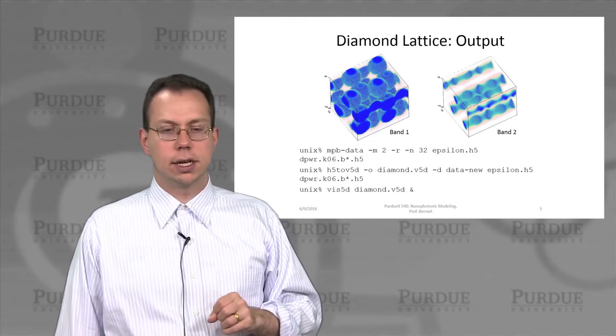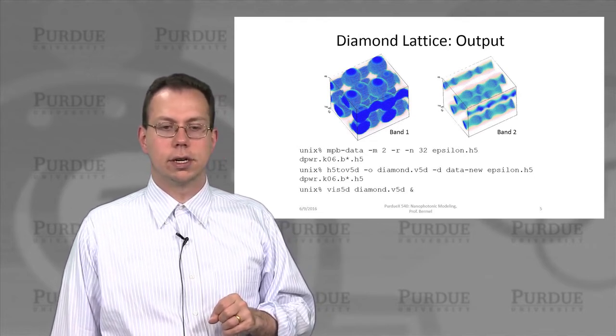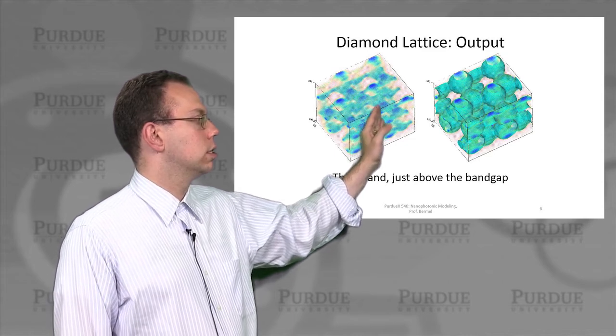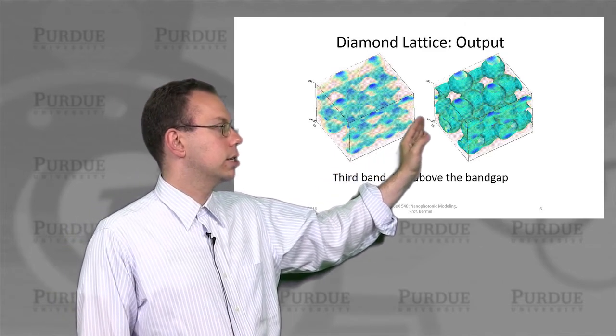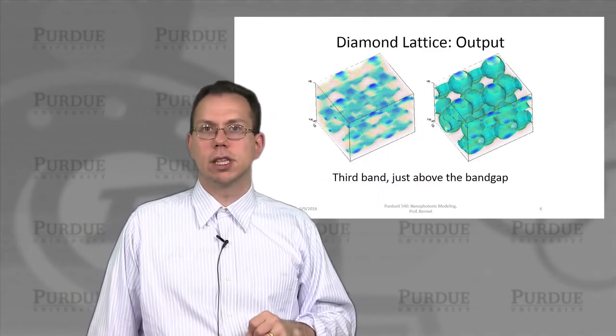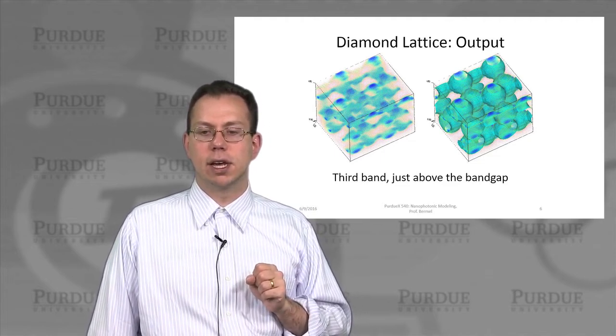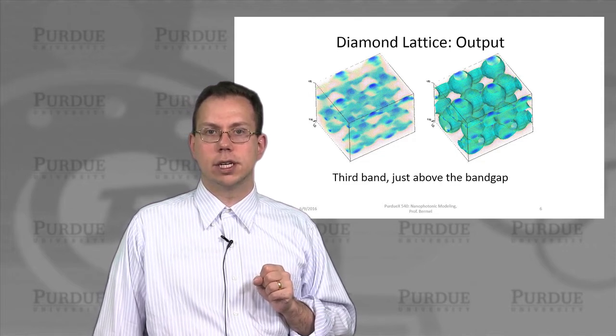And then the third band just above the band gap actually would be localized explicitly away from the high dielectric regions, which is expected. And that's why it has more energy, because the average epsilon is much lower.